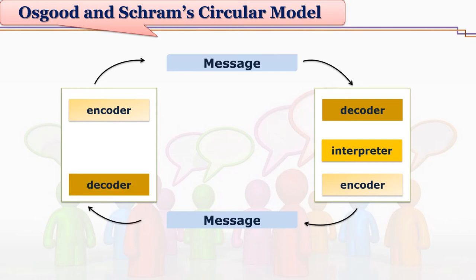We know that the sender encodes the message. Once the sender encodes a message and sends it to the receiver, the receiver tries to interpret that message by decoding. So the encoding and decoding process goes on. The person who receives the message decodes it, interprets it, and again encodes feedback.